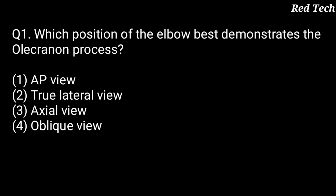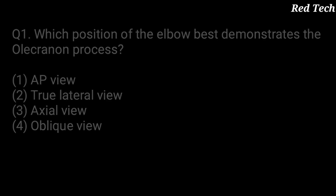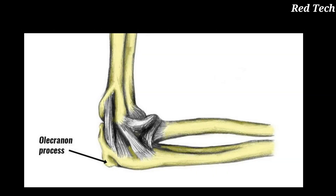Which is the best position of the elbow to see the olecranon process? Option 1 is AP view, option 2 is true lateral view, option C is axial view, and option D is oblique view. The right answer is option 2, true lateral view. In true lateral view, we can see the olecranon process. See the diagram to understand.